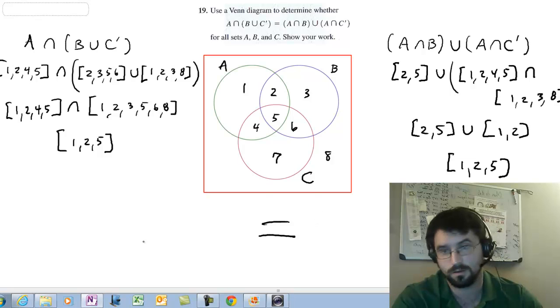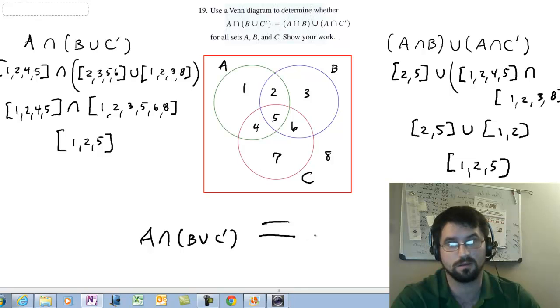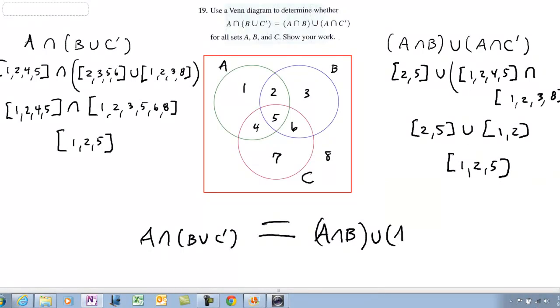A intersect B union C complement is equivalent, or equal to, I should say. Not equivalent to. Well, they're equivalent to each other, but being equal is harder, right? Because you have to have the exact same things, not the same number of things. So they are equal, no matter what A, B, and C might consist of. So that's how we do that. Going to the next page here.